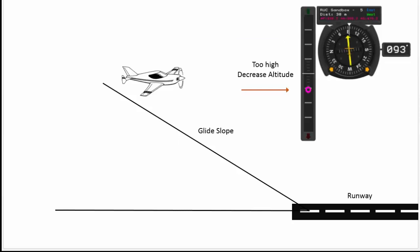This shows that the plane is too high above the glide slope. You can see the purple dot is now below the center line on the glide slope indicator. In this case what the pilot needs to do is increase the rate of descent or simply point the nose down to decrease the altitude until the indicator gets to the center.